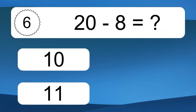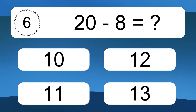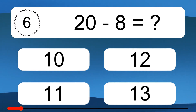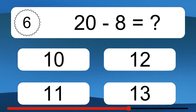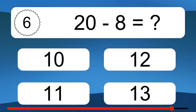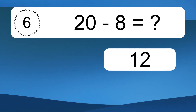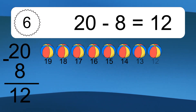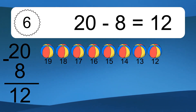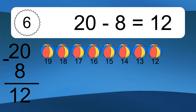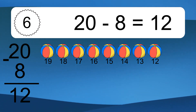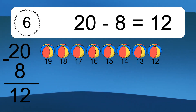20 minus 8 equals what? 20 minus 8 equals 12. Let's count it: 19, 18, 17, 16, 15, 14, 13, 12.